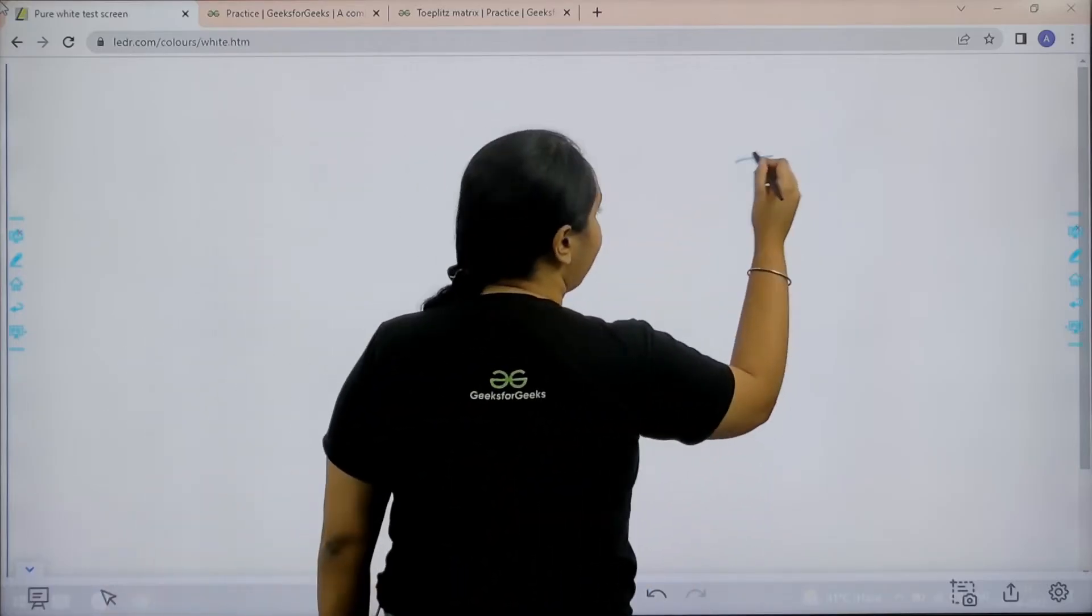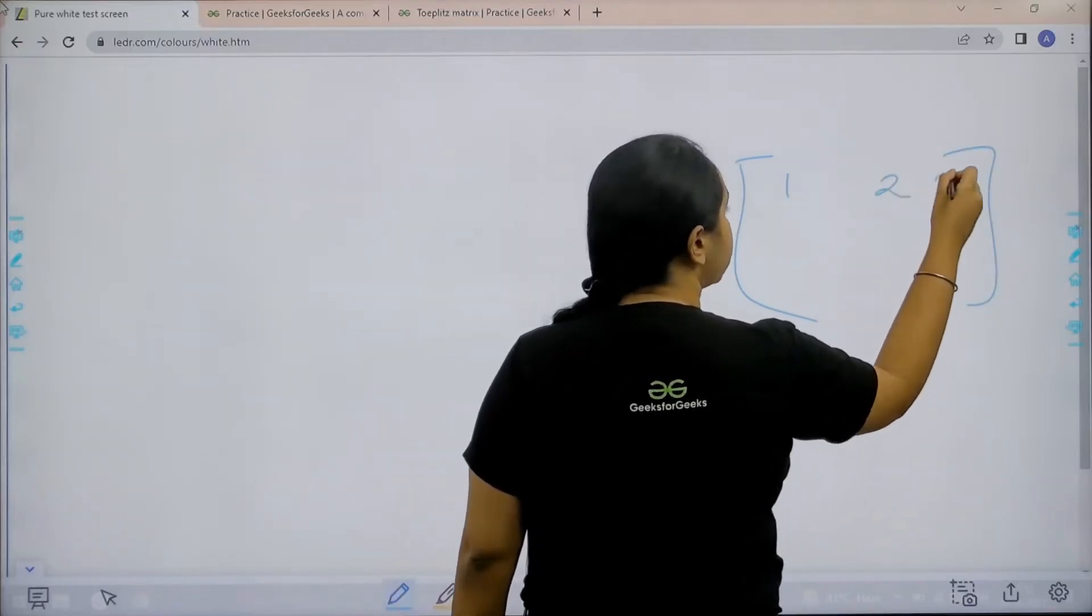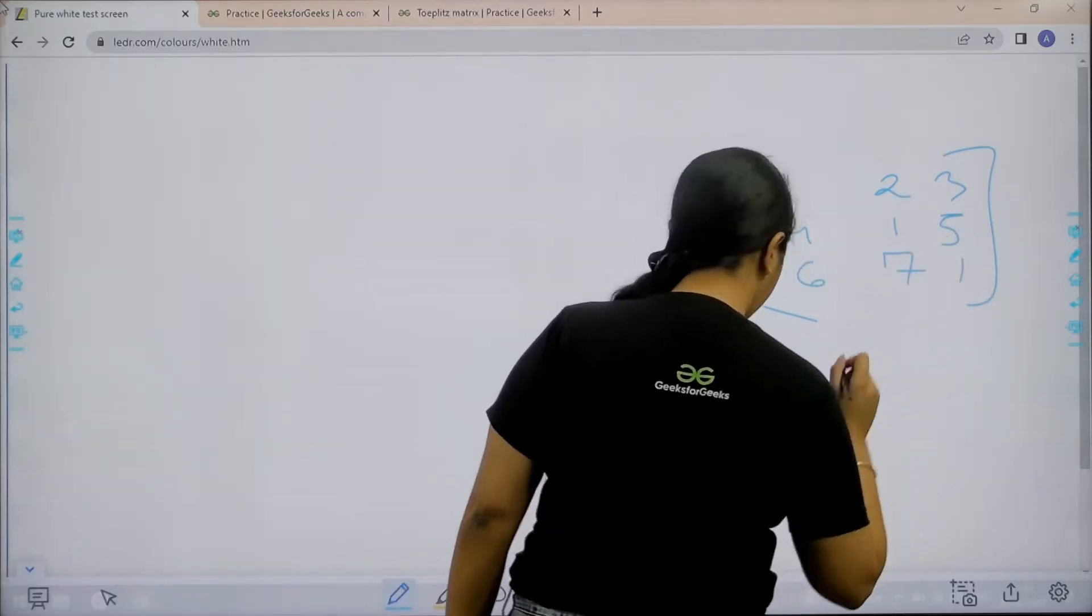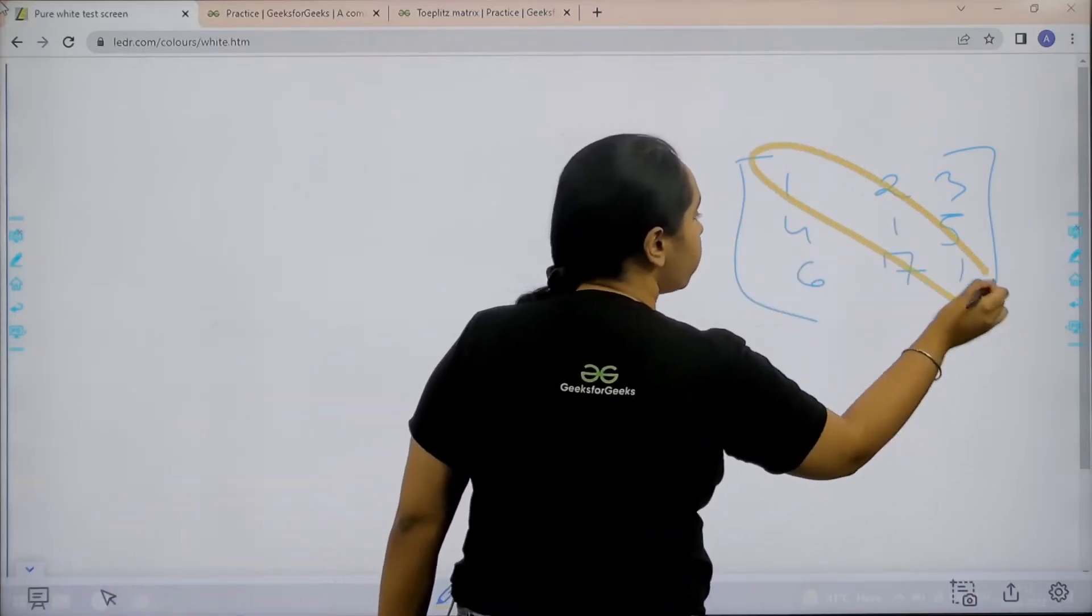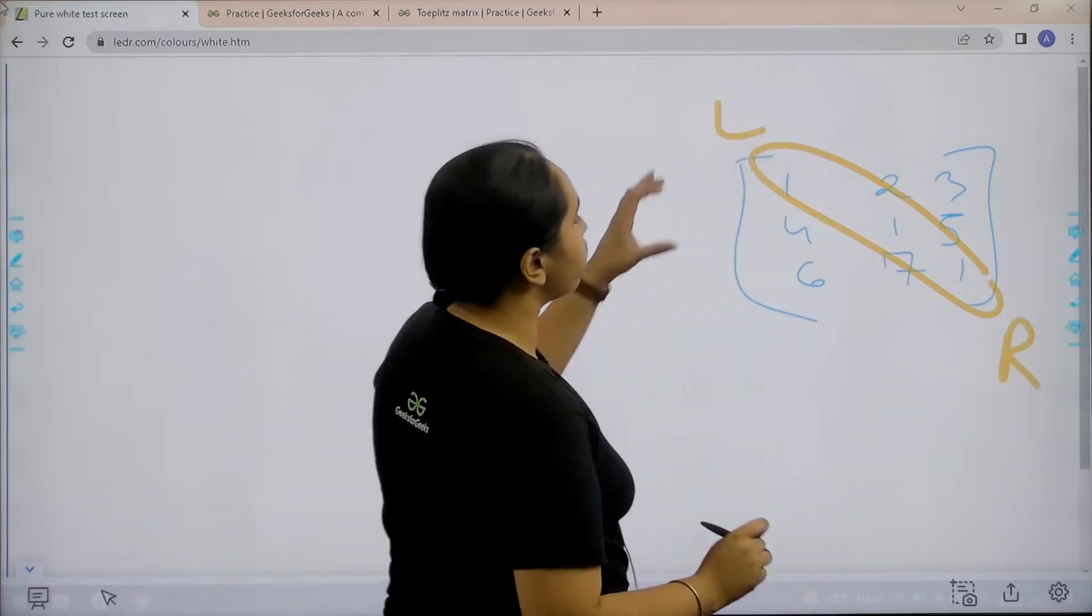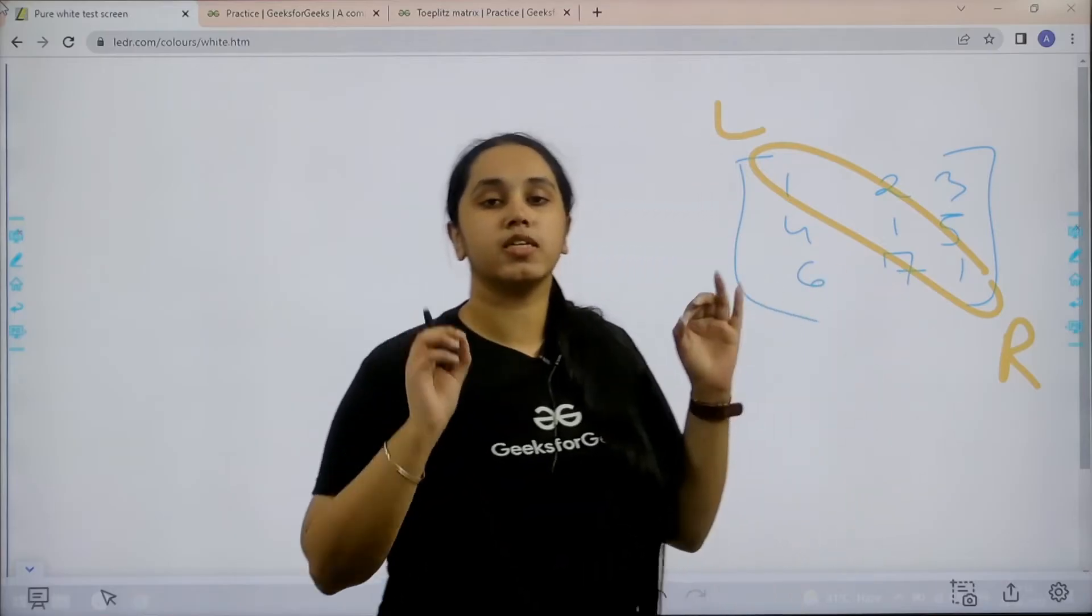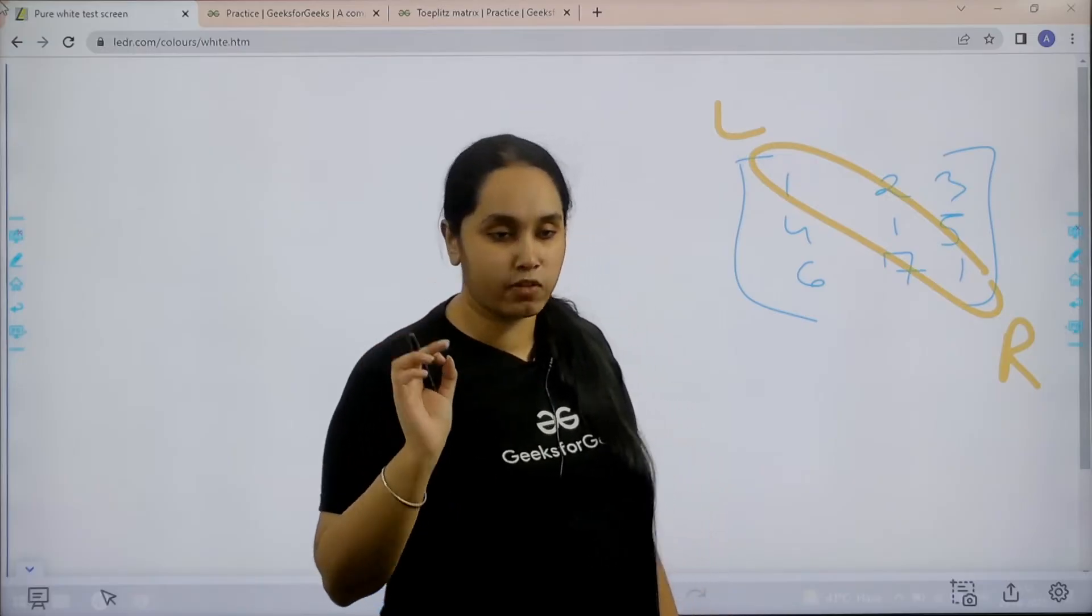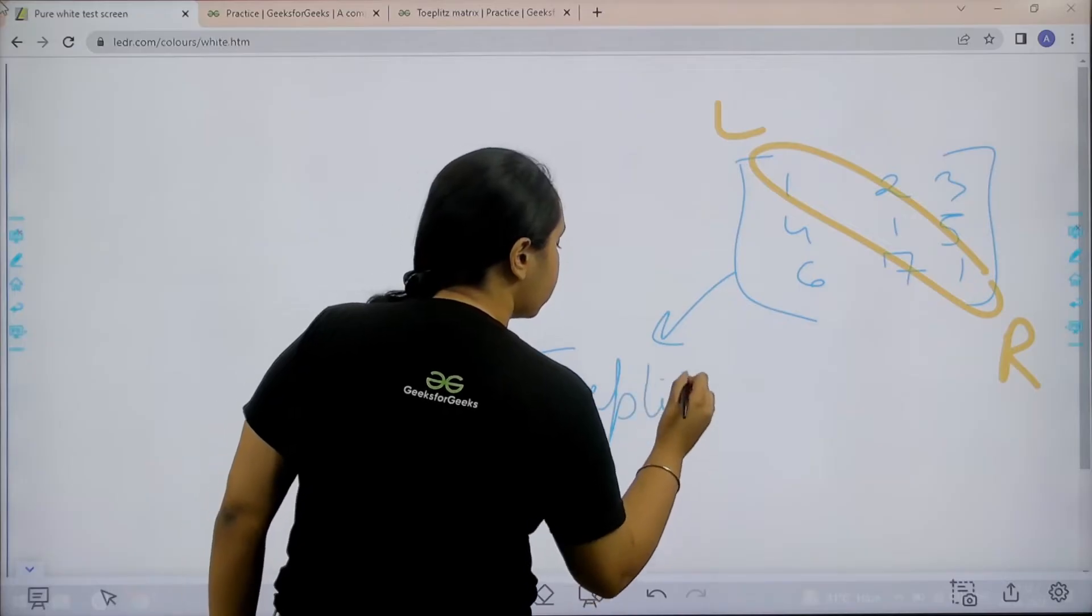Basically in this question we are given a matrix, a 2D matrix. Let's say 1, 2, 3, 4, 1, 5, 6, 7, 1. Now if you see carefully in this matrix, the diagonal elements from left to right are same. The diagonal elements from left to right are same. This kind of matrix in which the diagonal elements from the left side to the right side are same are known as Toeplitz matrix. So this is the example of Toeplitz matrix.